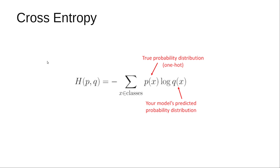To begin with, what is cross entropy? Cross entropy is a function that compares two probability distributions. The key thing to note is that cross entropy takes as input two probability distributions, q and p, and returns a value that is minimal when q and p are equal. q represents an estimated distribution and p represents the true distribution. In machine learning classification, the true target distribution p has probability one for the true label and zero elsewhere — that is, p is a one-hot vector.